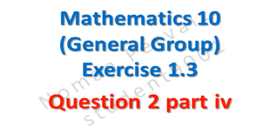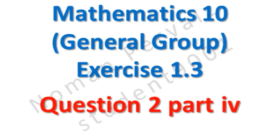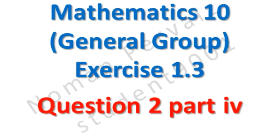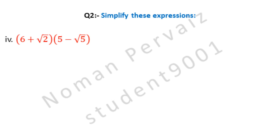Next, we are going to solve part 4 of question number 2 of 10th class math, general group, exercise 1.3. Question 2 is: simplify these expressions. And part 4 is (6 + under root 2) into (5 minus under root 5). Let's see its solution. We will multiply both these brackets.